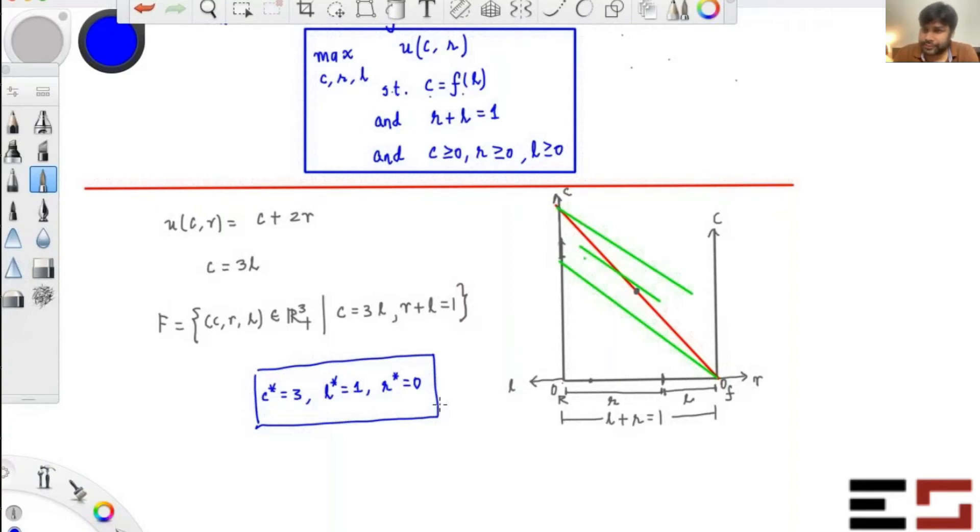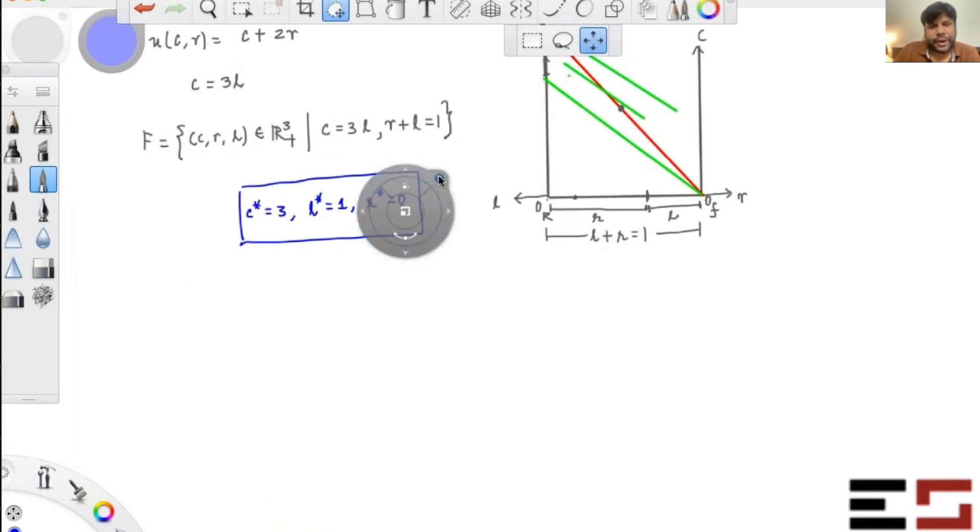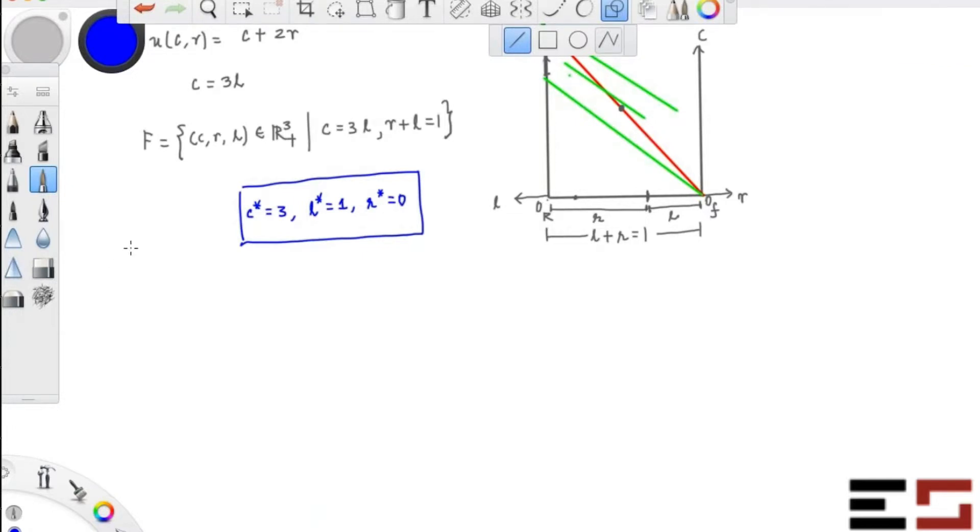Okay let's do one more. So now you will be doing it and I'll be waiting for you to do it. I'll give you the production function, I'll give you the utility function, and just figure out the Pareto efficient allocations.